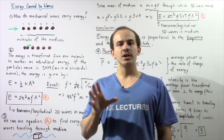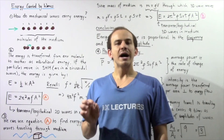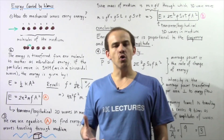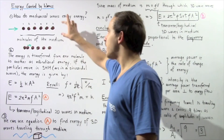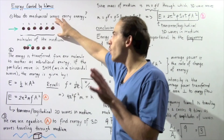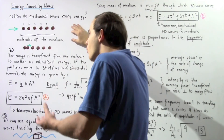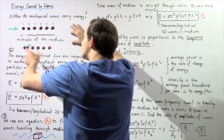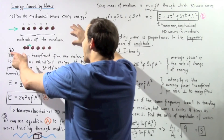The way mechanical waves transport energy in a medium is by the vibrational energies of the individual molecules that compose that specific medium. Let's suppose we have a medium composed of six molecules. The way a wave propagates through the medium is: a force acts on molecule 1 and causes molecule 1 to vibrate along a certain axis.